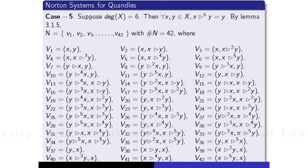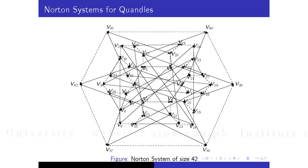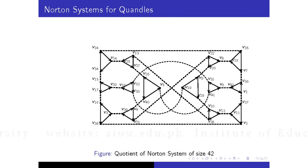And in the last case, for a rack of degree six, it will have 42 elements — the general elements are shown here. This is its Norton system, and this is its quotient.